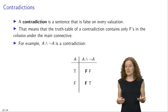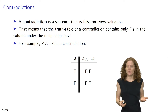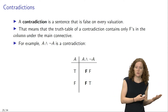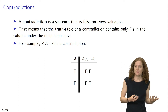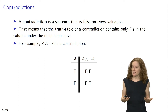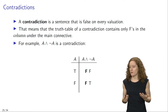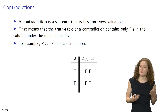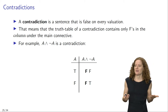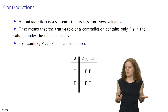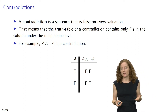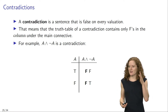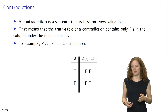Here you can see the truth table of this sentence. 'Not a' is false when a is true and true when a is false. Now, a conjunction is true if and only if both conjuncts are true, and since there's no possible valuation on which both a and 'not a' are true, it follows that the conjunction 'a and not a' is false on every possible valuation. This is represented in the column under the main connective, which is the conjunction sign.